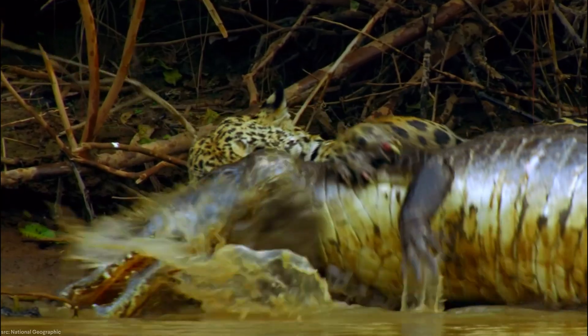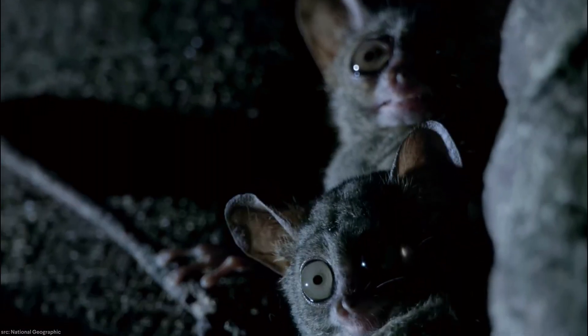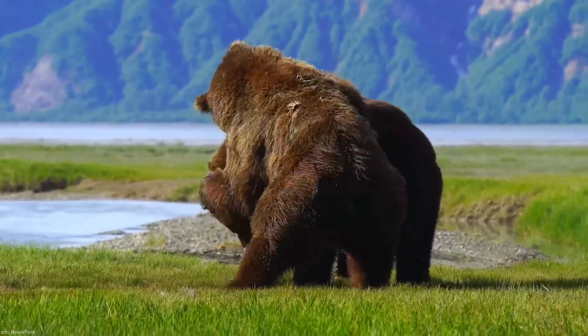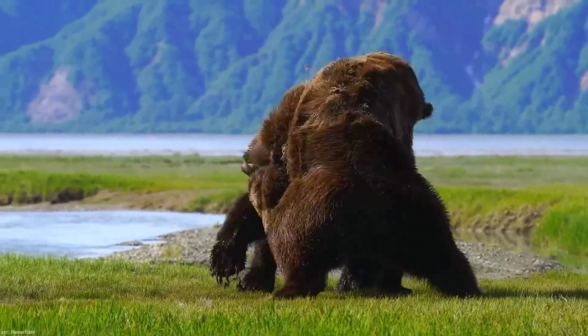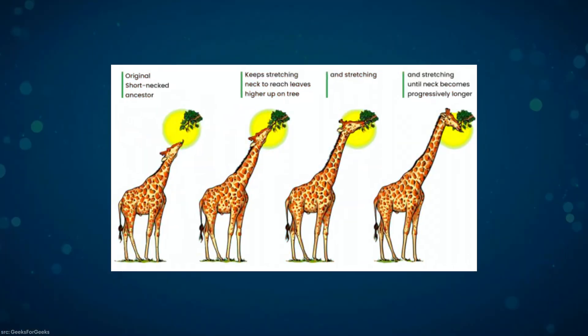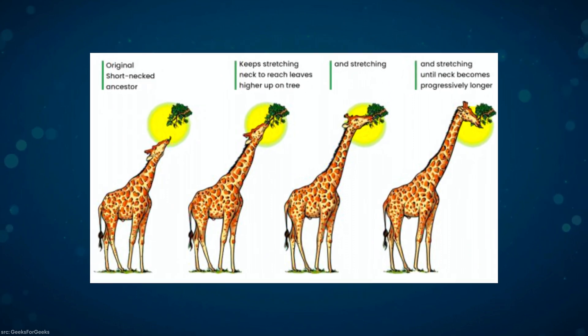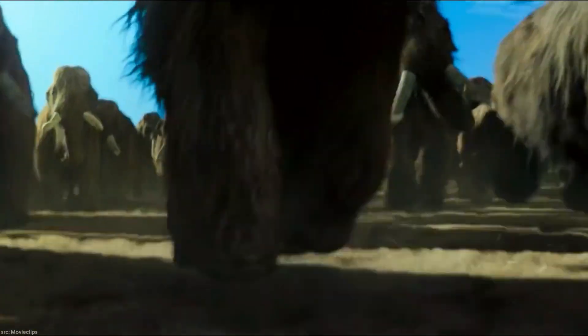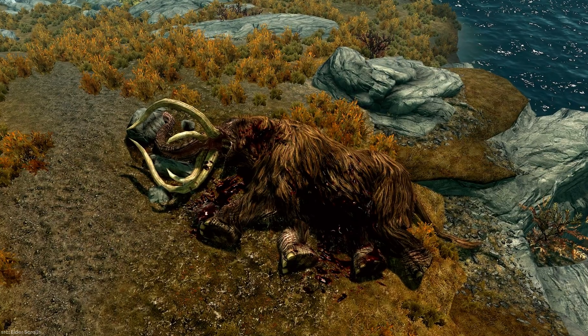The term 'survival of the fittest' was invented by Herbert Spencer, a British philosopher, and is a widely accepted concept in evolutionary theory. While it can be interpreted differently by different people, its primary meaning is that individuals who are fit and strong have a higher likelihood of survival. It also includes the idea that as species change over time, those that are less adapted become extinct.